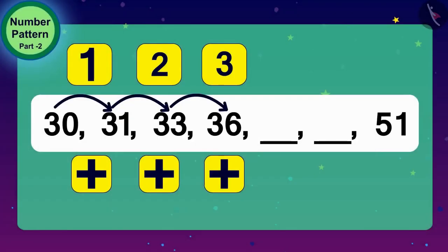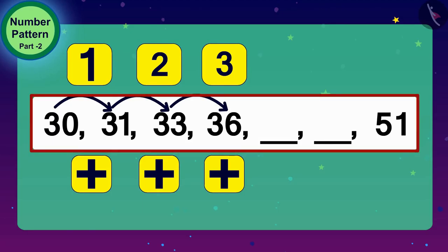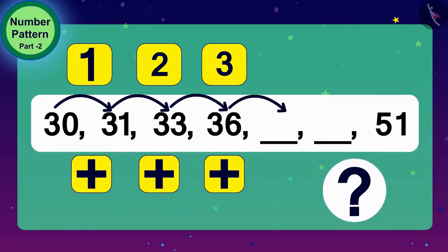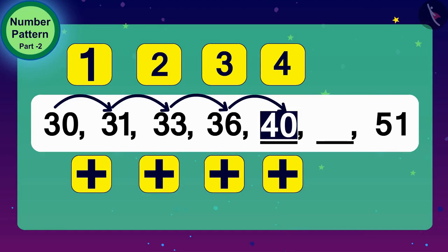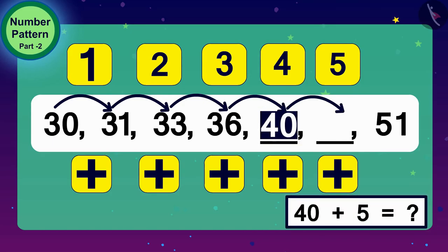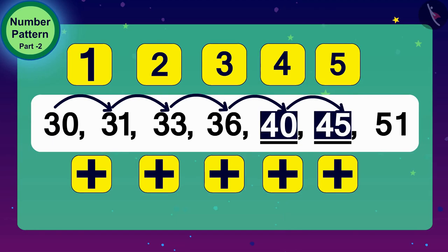So, what do we need to do now to pursue this number pattern? We have to add 4 to 36. This gives us what? 40. And what shall we do to get the next number? That's correct. Add 5 to 40. Adding 5 to 40. 45. Oh, wow! We filled in the blanks of this increasing number pattern.